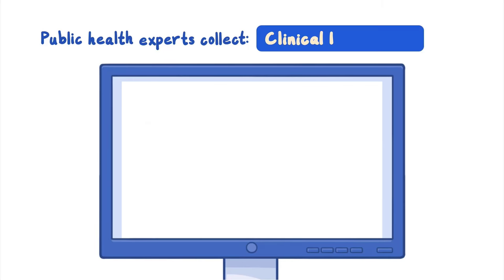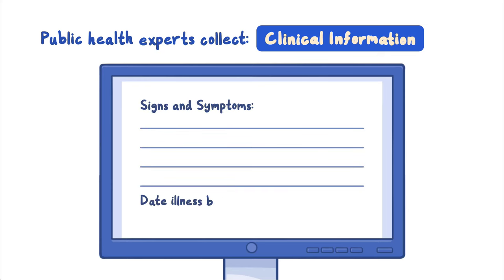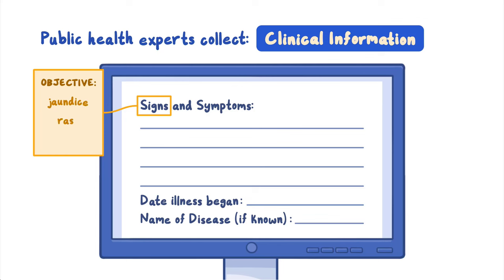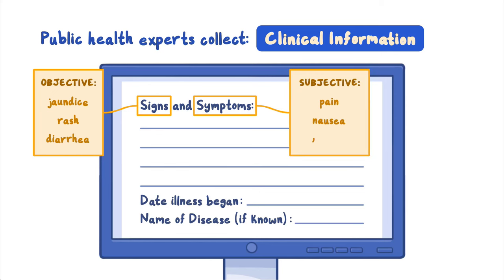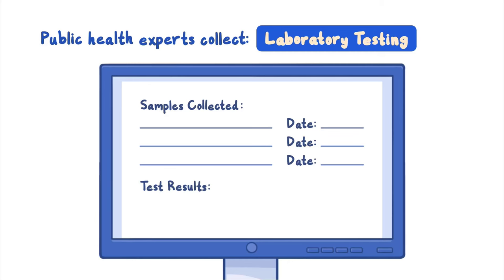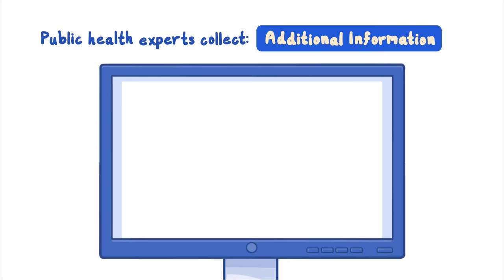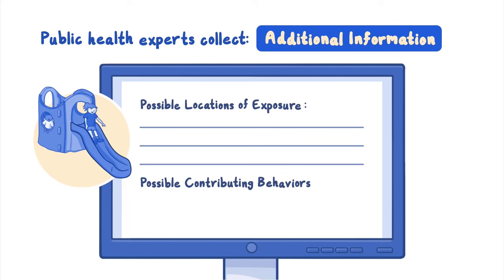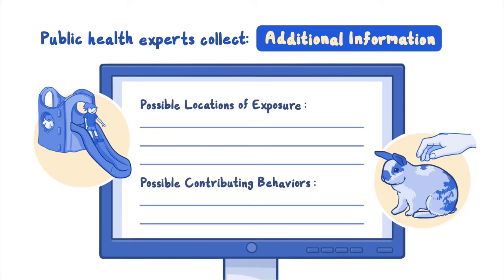Demographic information is generally followed by clinical information, such as signs and symptoms, the date the illness began, and the name of the disease, if known. Signs of a disease are the objective observations noted by a healthcare provider, such as jaundice, rash, or diarrhea, and symptoms are subjective reports by the patient, such as pain, nausea, or fatigue. Information on laboratory testing generally follows clinical findings, including samples collected, collection dates, and test results. Other information may be collected, including possible places the person could have been exposed, such as a childcare center, or behaviors that could have contributed to infection, such as injecting drugs or not washing hands after being around animals.